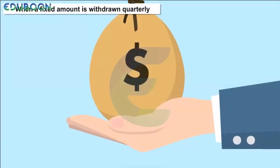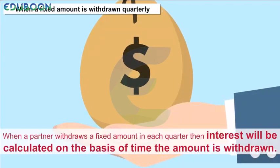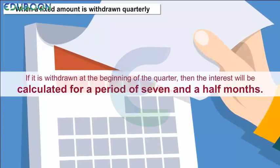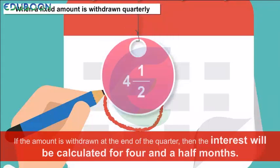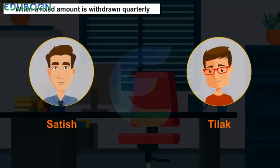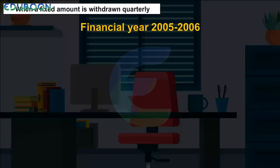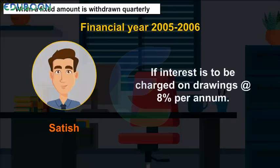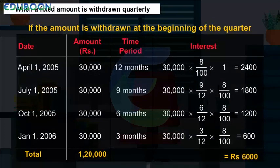Interest on Drawings — When a Fixed Amount is Withdrawn Quarterly. When a partner withdraws a fixed amount in each quarter, interest will be calculated on the basis of time the amount is withdrawn. If it is withdrawn at the beginning of the quarter, then the interest will be calculated for a period of 7 and a half months. If the amount is withdrawn at the end of the quarter, then the interest will be calculated for 4 and a half months. For example, Satish and Tilak are partners in a firm sharing profits and losses equally. During the financial year 2005-2006, Satish withdrew Rs. 30,000 quarterly. If interest is to be charged on drawings at 8% per annum, the calculation of average period and interest on drawings will be as follows.